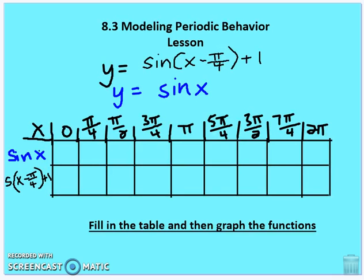The first thing I want you to do is create a table for sine: y is equal to sine of (x minus pi fourths) plus one, and y is equal to sine x. Then fill in the table and graph the functions. I'm going to pause here while you do that.